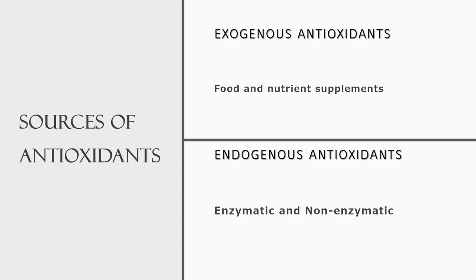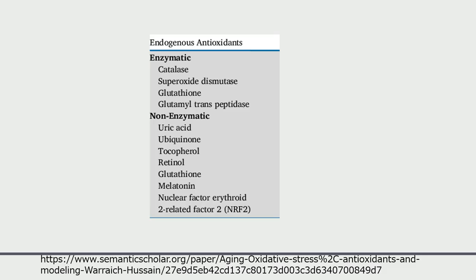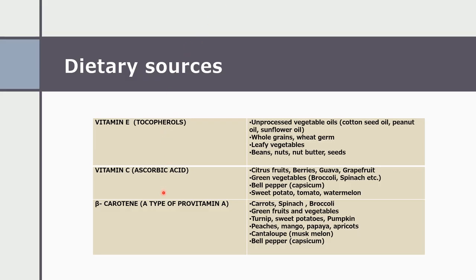The sources of antioxidants can be exogenous — obtained from outside the body through food and supplements — or endogenous, meaning produced from within the body, either by enzymatic or non-enzymatic mechanisms. Examples of endogenous enzymatic antioxidants include catalase and superoxide dismutase, while non-enzymatic sources include uric acid and ubiquinone. Most antioxidants can be obtained from food sources, and supplementation is not usually necessary.